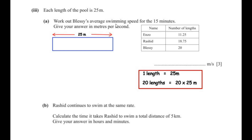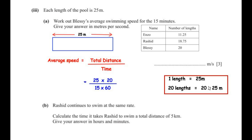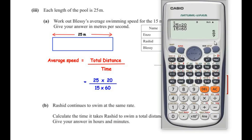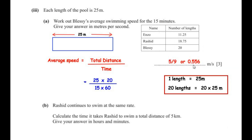Blessie swims 20 lengths, so the total distance is 20 times 25 meters. Using the formula average speed equals total distance over time, the distance is 20 times 25 and the time is 15 minutes converted to seconds by multiplying by 60. This gives us 5 over 9, or as a decimal 0.556 meters per second rounded to 3 decimal places.